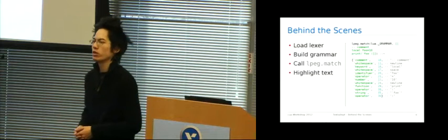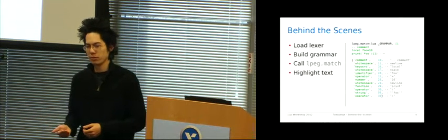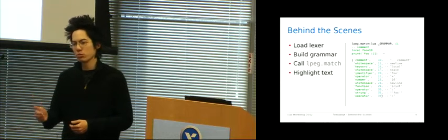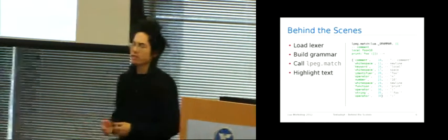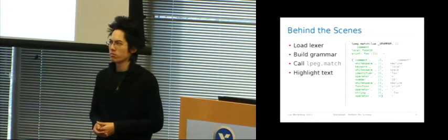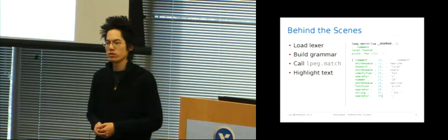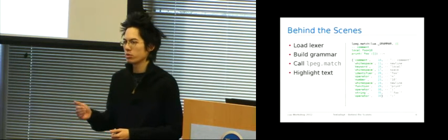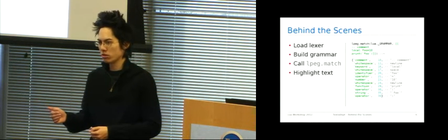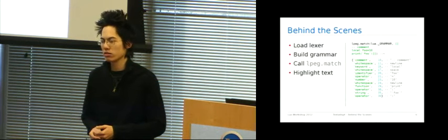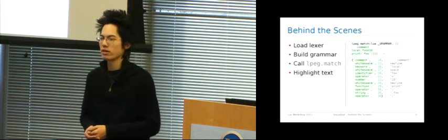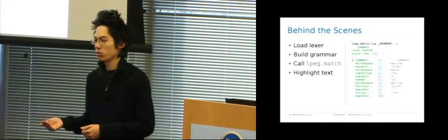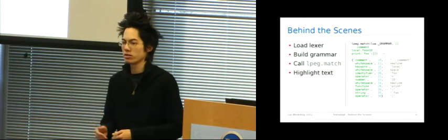So behind the scenes, all I'm really doing is I'm loading this Lexer, I'm building its grammar from its rules table, I'm calling lpeg.match on the given input text, and then using the output, I'm actually doing the highlighting. So on the right hand side, you can see an example of the matcher and the output in action. So given this snippet of Lua input text and using the Lua grammar, the lpeg.match function returns a table of tokens, followed by the positions in the text that the tokens match up to. So you can see that the first 10 characters in that input text should be highlighted as a comment, the next character as white space, the next five characters as a keyword, and so on. Now I actually have some C code that does the physical highlighting, but it is Lua that tells the highlighter what exactly to highlight.